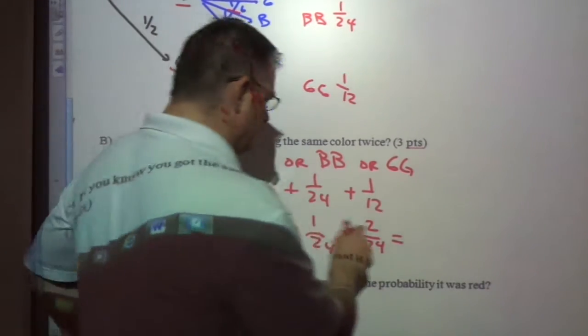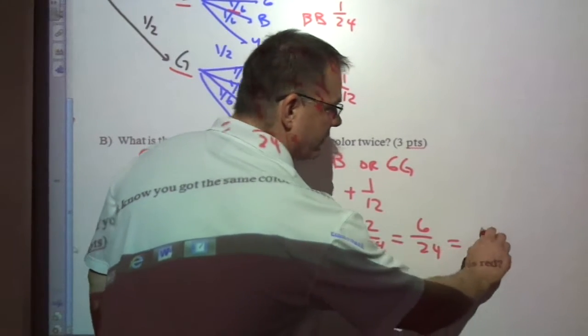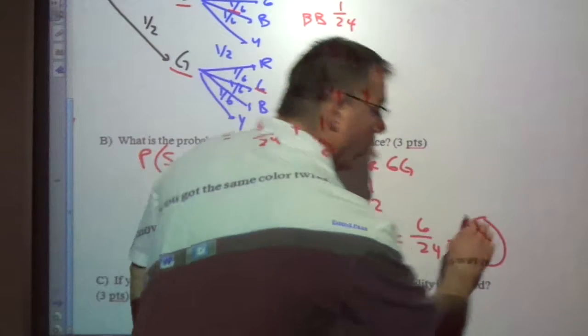Now I just add the tops, keep the bottoms the same. Three plus one is six, six, or is four. Four plus two more is six. So I have six-twenty-fourths, that reduces to be one-fourth.